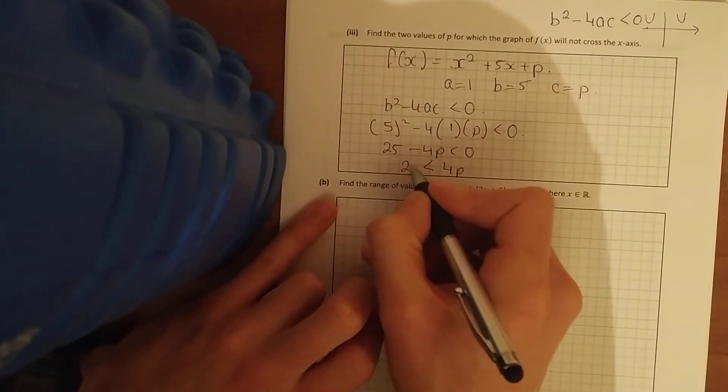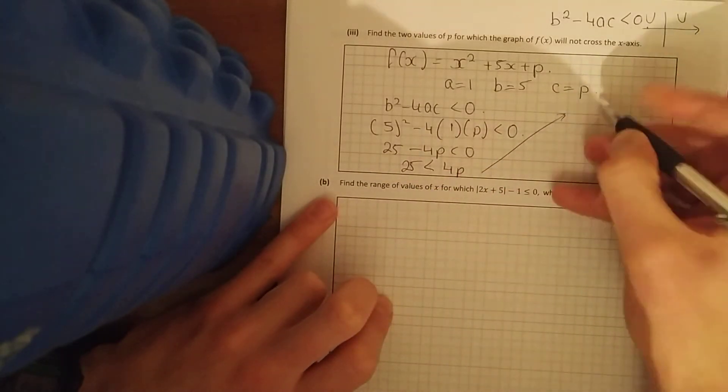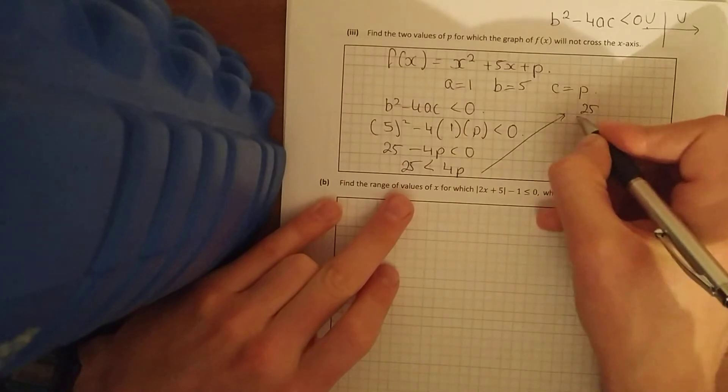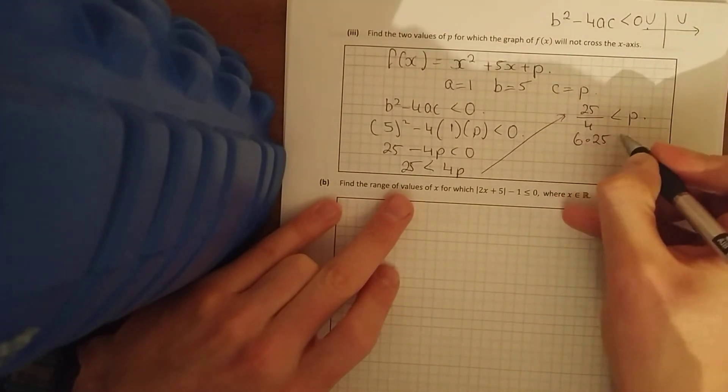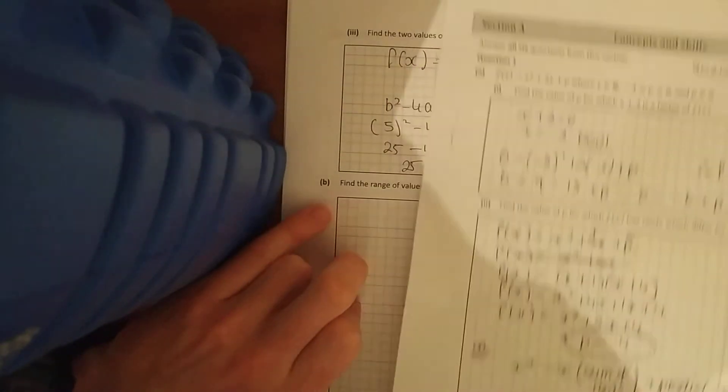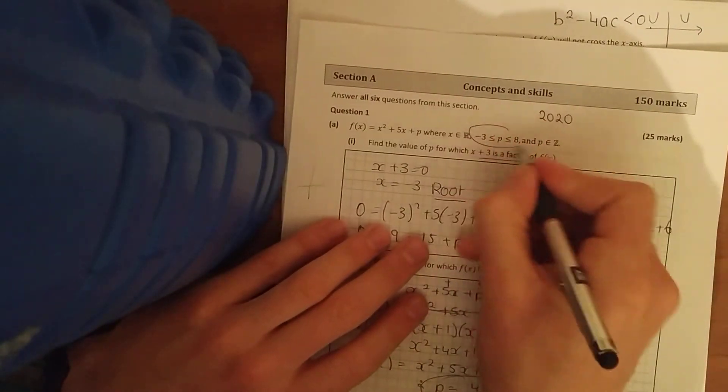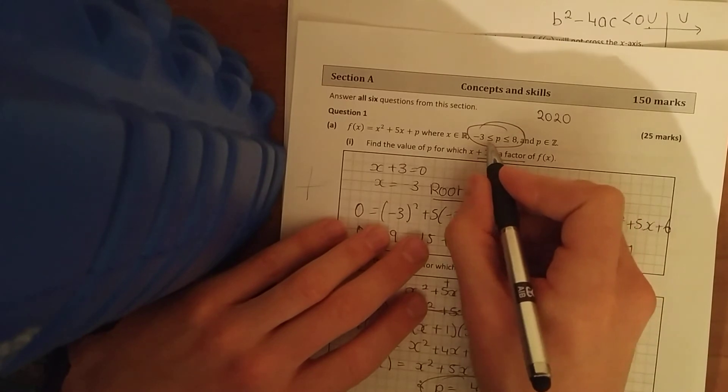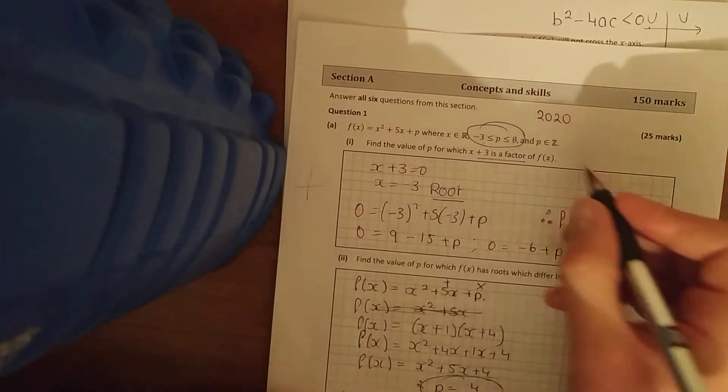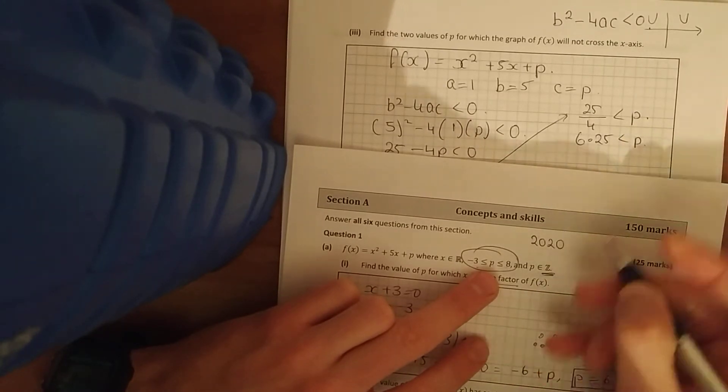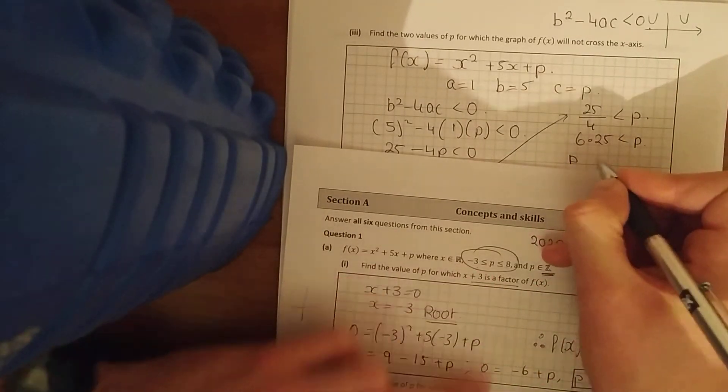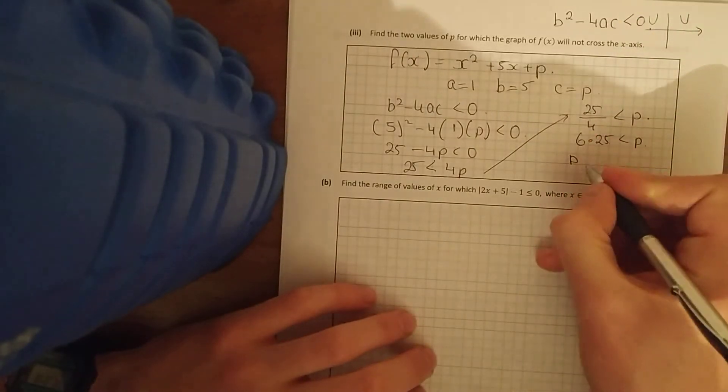25 minus 4p less than zero. 4p is bigger than 25. 25 over 4, p is bigger than 25 over 4 which is 6 and a quarter. And if you look at the bits at the start, it says p is bigger than minus 3 less than or equal to 8. So here values that are bigger than 6.25 and they're integers, whole numbers, that means p must be 7 and p must be 8.